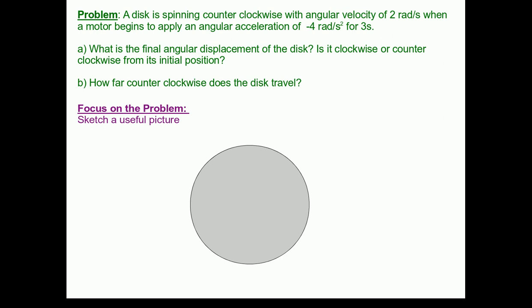Let's begin focusing on the problem by sketching a useful picture. So here's our disk. I'm going to add a line to help us as a reference point. Our disk is initially rotating counterclockwise at an angular velocity of 2 radians per second.